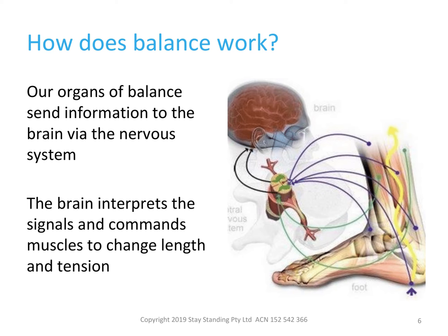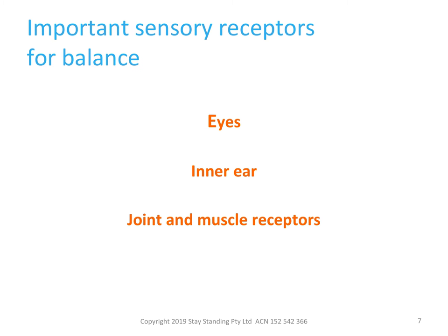Sometimes things can go wrong, resulting in a fall. The World Health Organisation definition of a fall is an event which results in a person coming to rest inadvertently on the ground or a lower level. One of the key words in this definition is inadvertently, meaning that the fall was an unplanned event. We discuss why falls are a problem for older adults and the wider community in a separate presentation. For now, we'll consider the three key organs of balance: the visual system including the eyes, the vestibular system including the inner ear, and the proprioceptive system, especially the lower limb joint and muscle receptors.